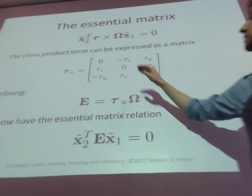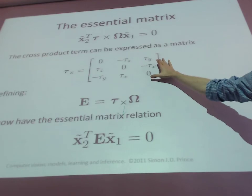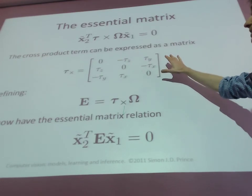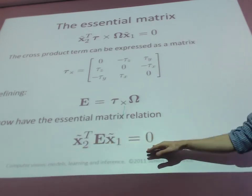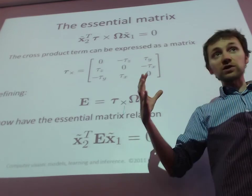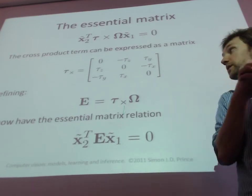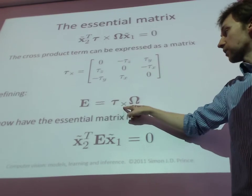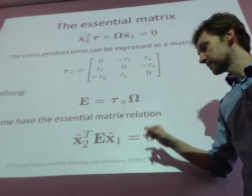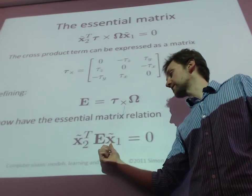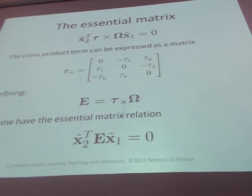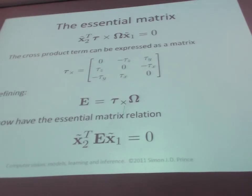We've turned the cross product into a linear matrix multiplication using a standard linear algebra trick, and arrived at the essential matrix E — equal to tau-sub-cross times omega — which encodes the translation and rotation between the two cameras. This linear relationship will allow us to use suggested correspondences x1 and x2 to solve for the camera geometry. We'll pick up the rest of the essential matrix derivation next time.